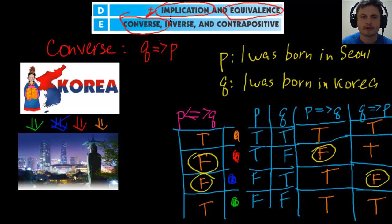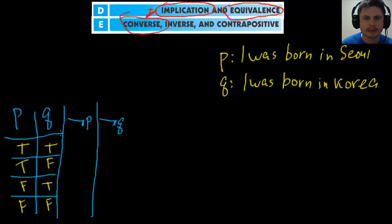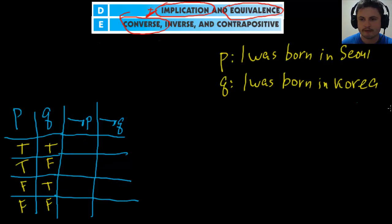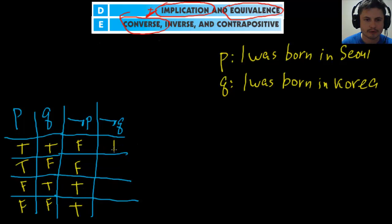We have two more to cover: inverse and contrapositive. To explain these, I need to add columns for the negations of P and Q to our truth table. Not-P gives: false, false, true, true. Not-Q gives: false, true, false, true.